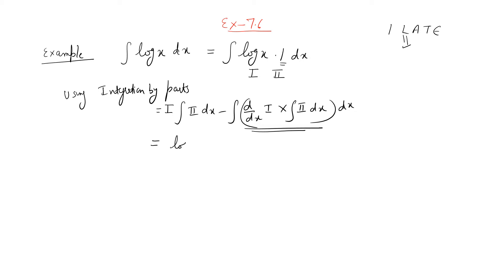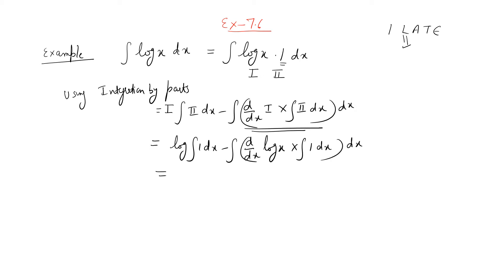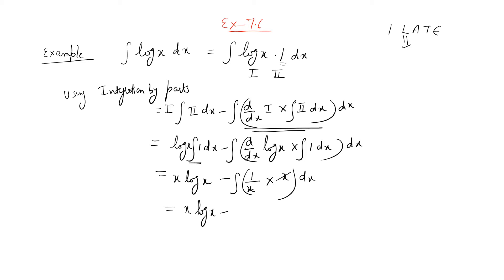So the first function is log x, integral of 1 dx is x. This gives x·log x minus the integral of (1/x · x) dx, since d/dx of log x is 1/x. This simplifies to x·log x minus integral of 1 dx, giving x·log x − x + c. So the integral of log x dx is x·log x − x + c, solved using integration by parts.